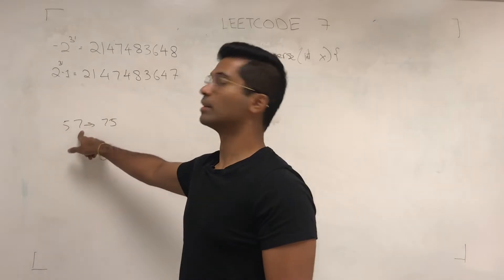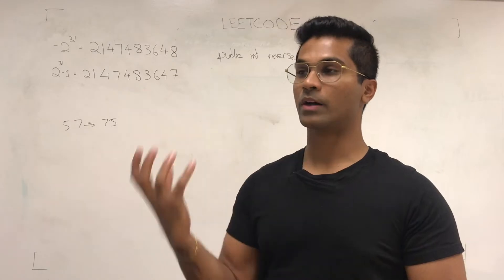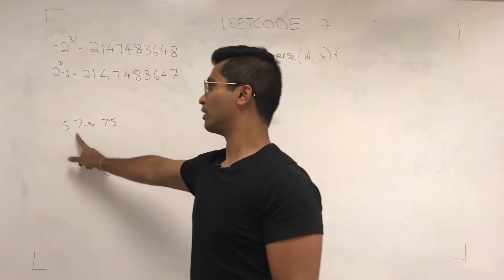Pretty much they give us a number like this. We just swap the digits around. The basic approach is you mod the number to get the number in the ones place, and then you divide the number by 10 to eliminate that, and then it becomes 5.